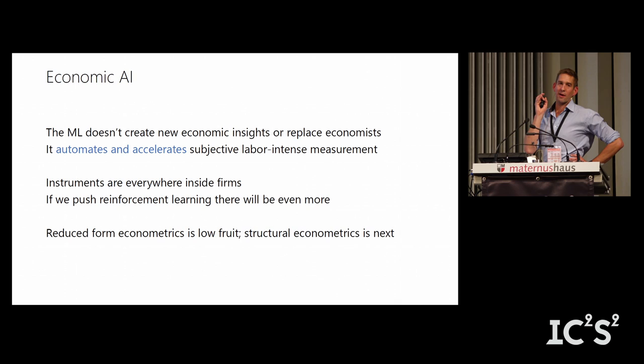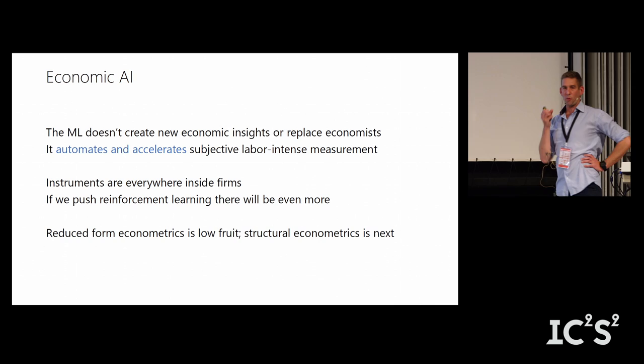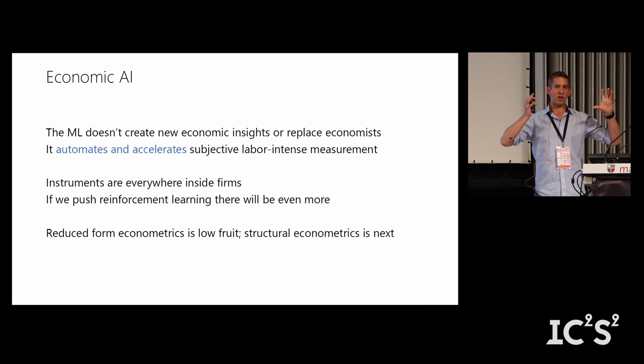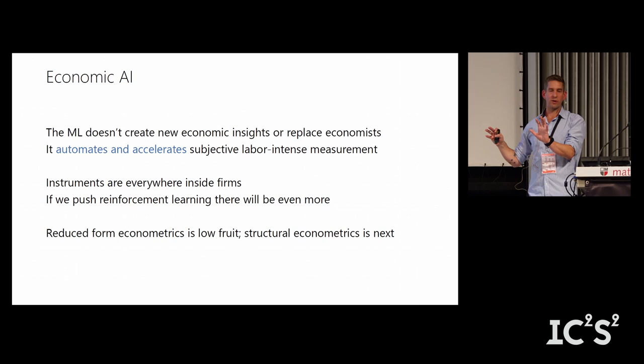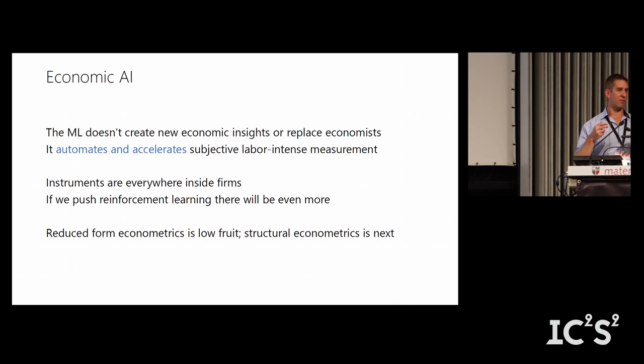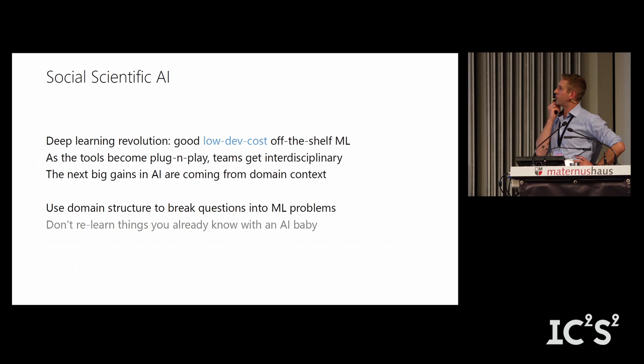To finish: the idea of this talk is certainly not radical. Machine learning doesn't create new insights or replace economists. But you can take structural and reduced-form econometrics you're already doing — same applies in social science — find the things that are just pure prediction tasks, and instead of working hard to optimize those, outsource them to machine learning. Also, instrumental variables are everywhere inside firms because we're always randomizing, just not always the right things.